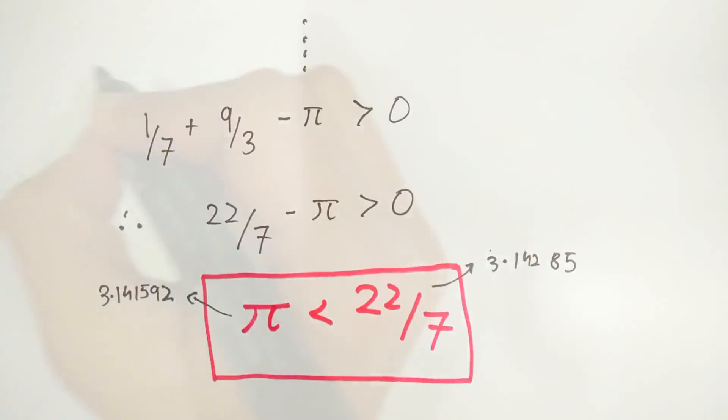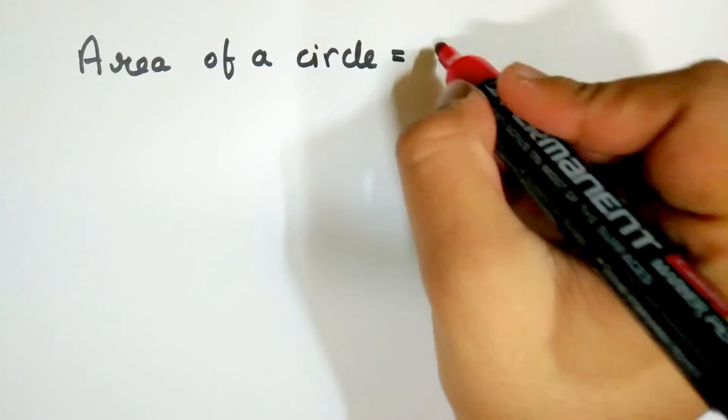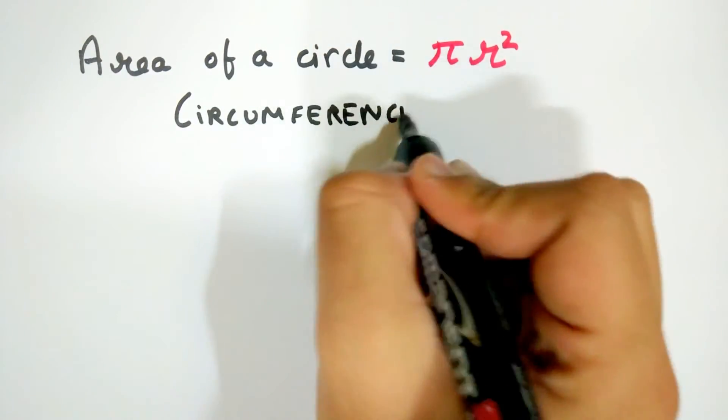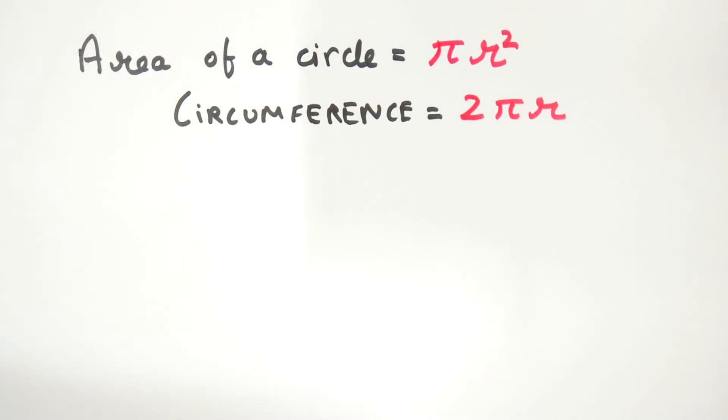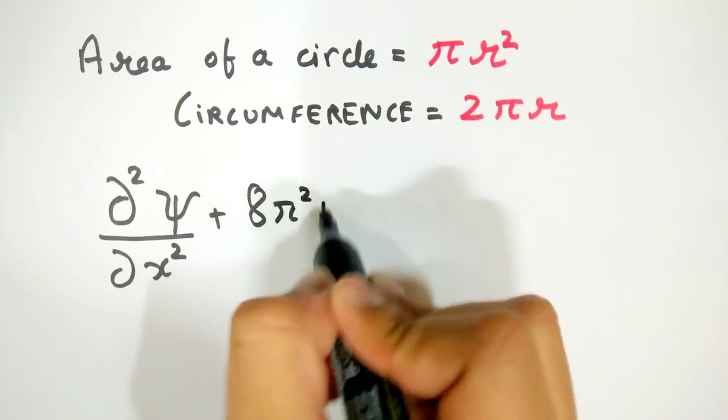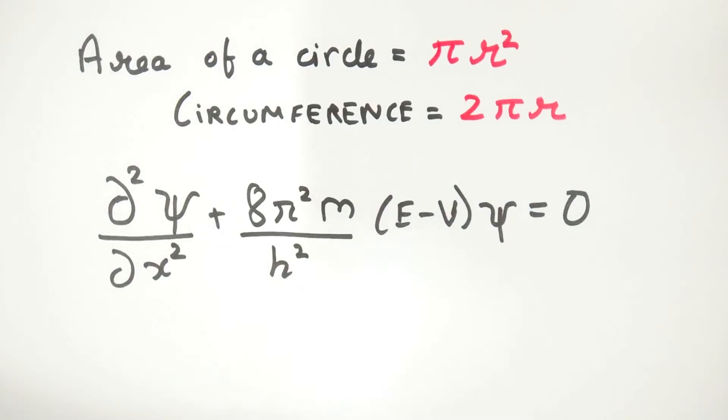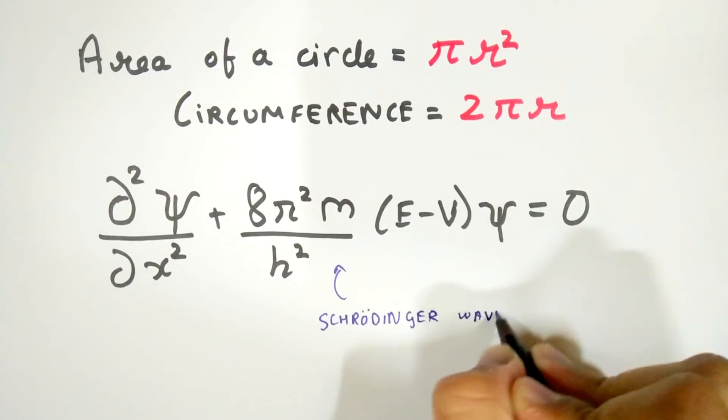This difference in the values of pi and 22 upon 7 does not make much of a difference for daily use, but it usually can create a misconception that 22 upon 7 is equal to pi. Show this to a maths teacher and be a superstar.